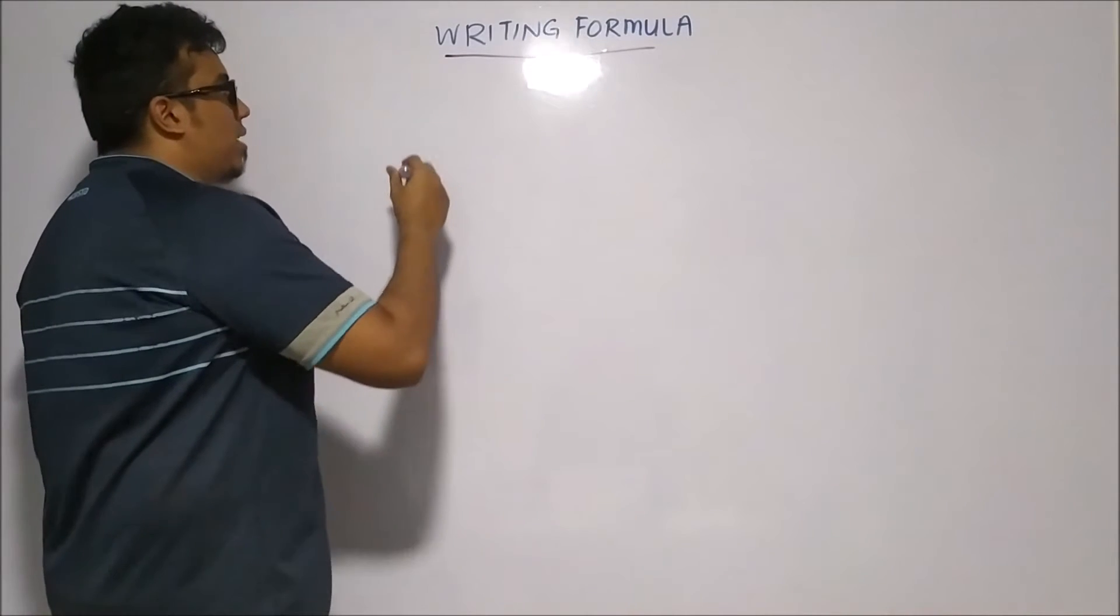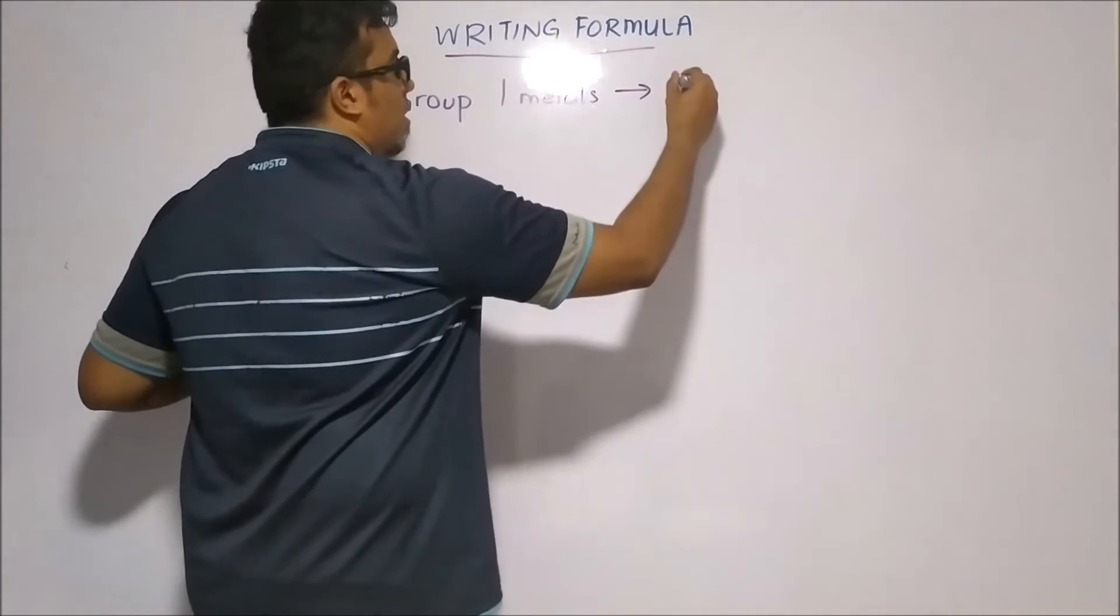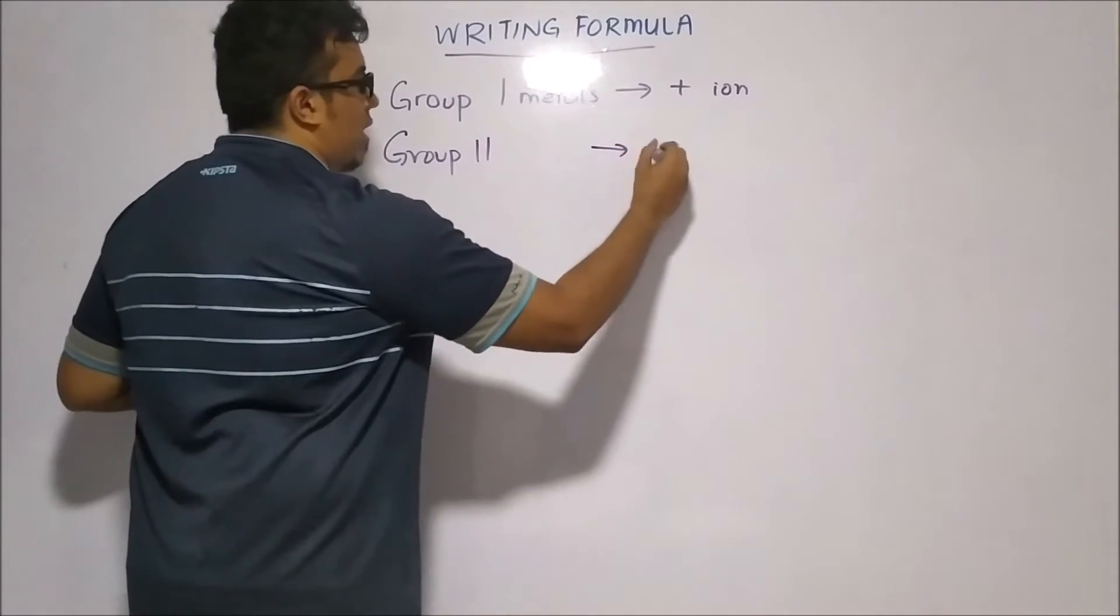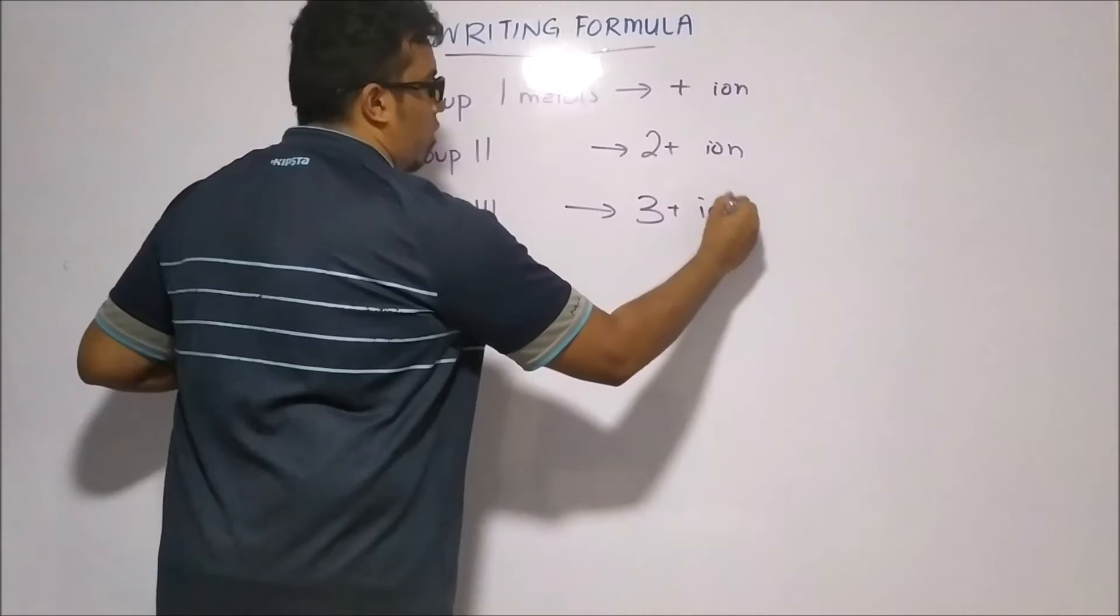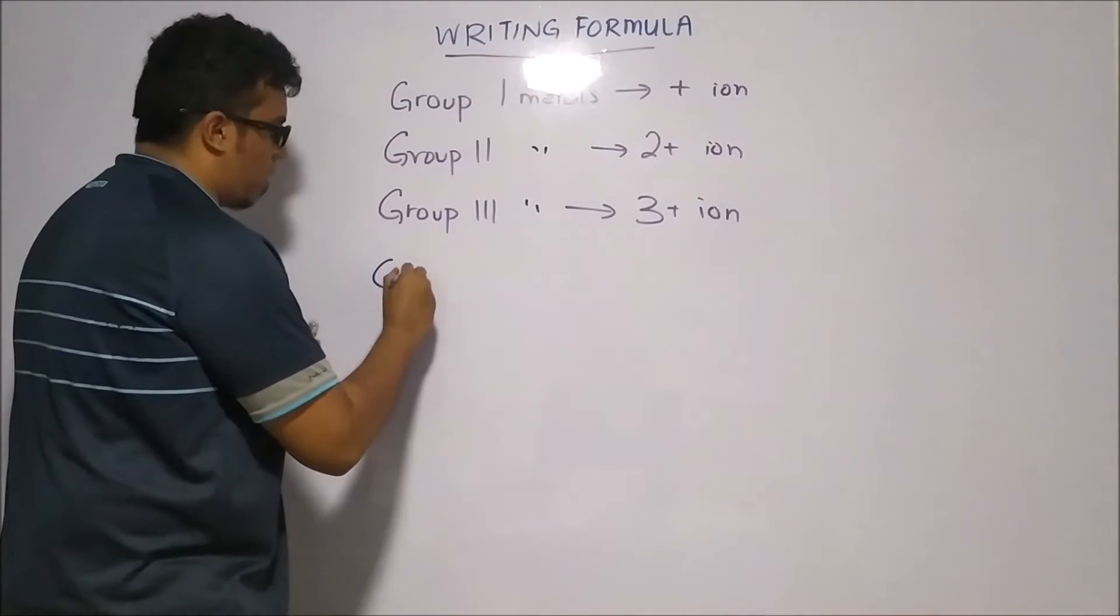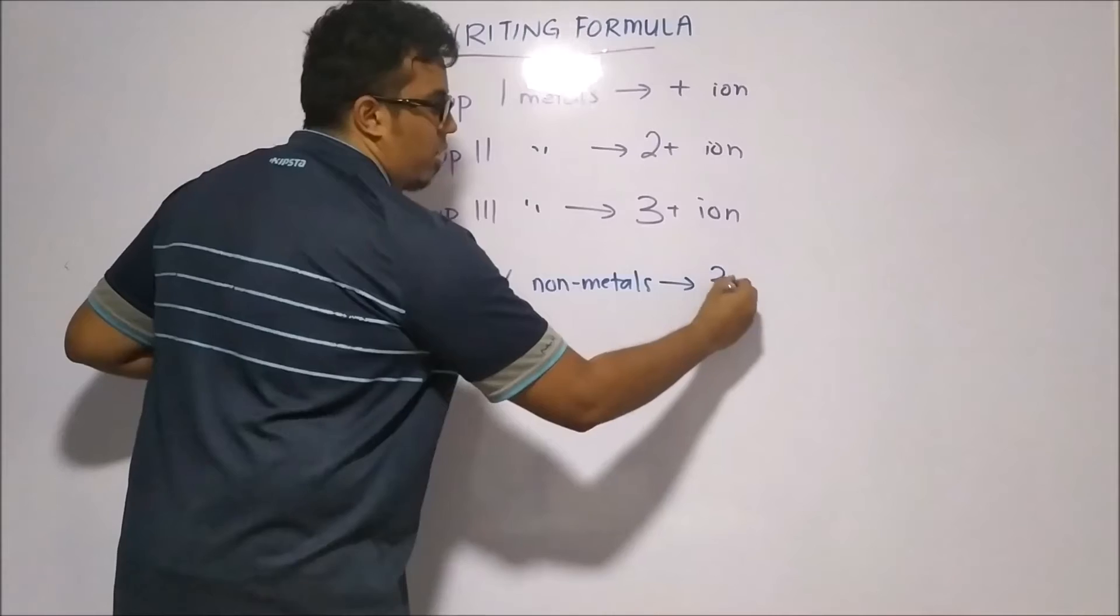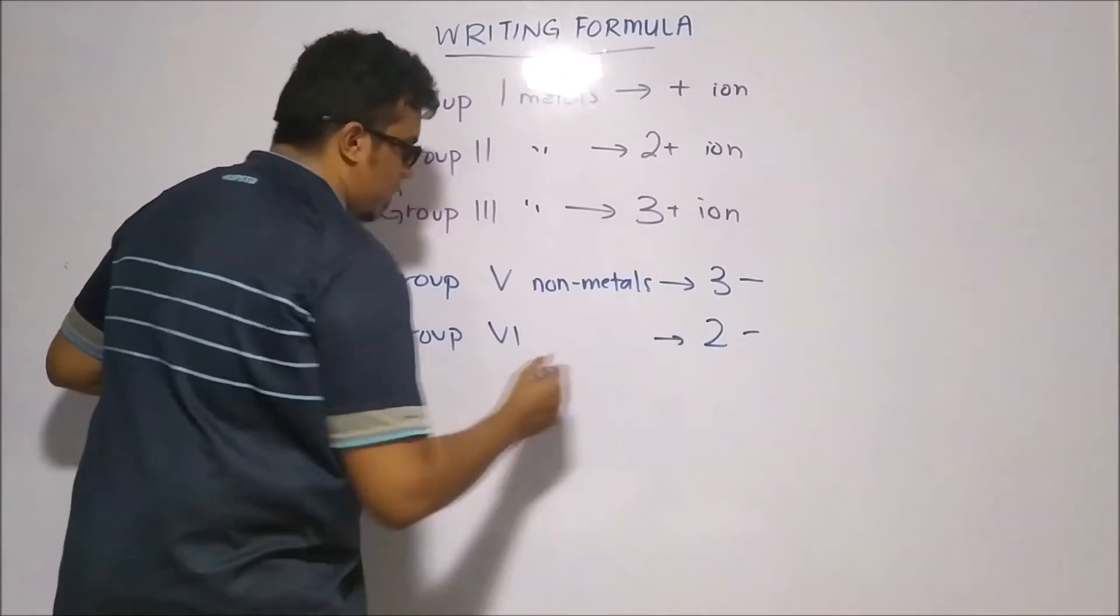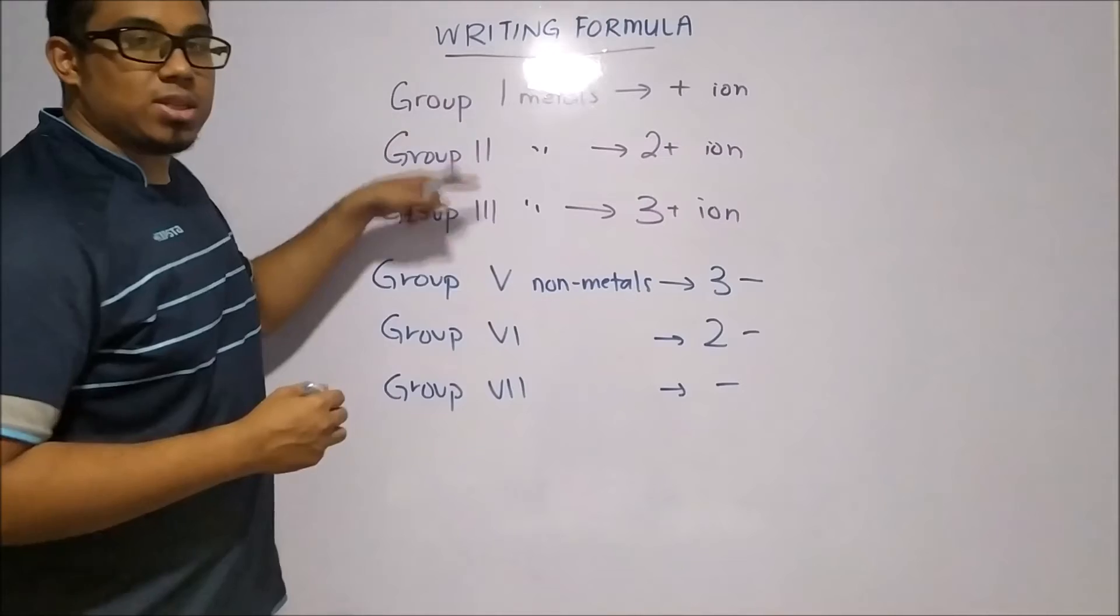So writing formulas. First of all, what are some important things that you need to know is that we have recalled that group 1 metals, they tend to form 1+ ion. Group 2, they tend to form 2+ ion, and group 3 will form 3+ ion. For the non-metals, we were looking at group 5. They will form 3-, group 6 which will form 2-, and group 7 which usually forms 1-. So these are the charges that relate to the periodic table.